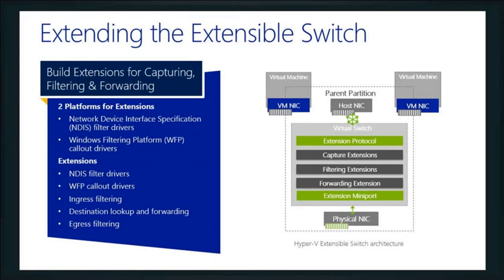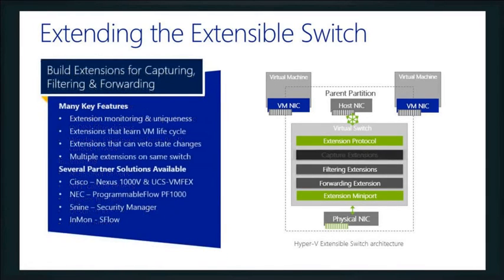It might do forwarding extensions or filtering extensions. It allows us to plug into our networking model to get a consistent feel. From a Hyper-V perspective, we really don't care what you're doing on the physical side to make your network sing — we're going to be friendly with it and extend that switch. We support NDIS filter drivers for extensions and we can use the Windows filtering platform. We support partners like Cisco's Nexus 1000V, and allow that extension very nicely inside our virtual environment.